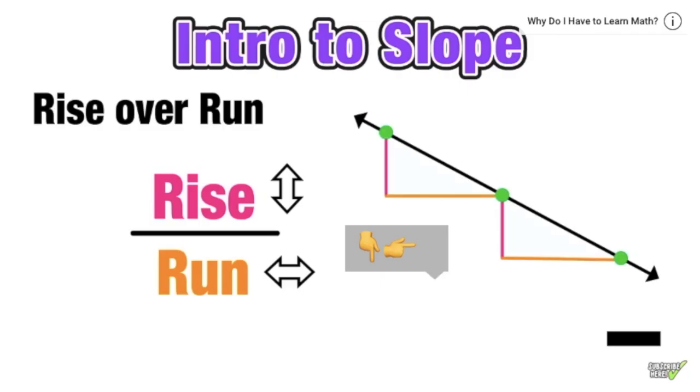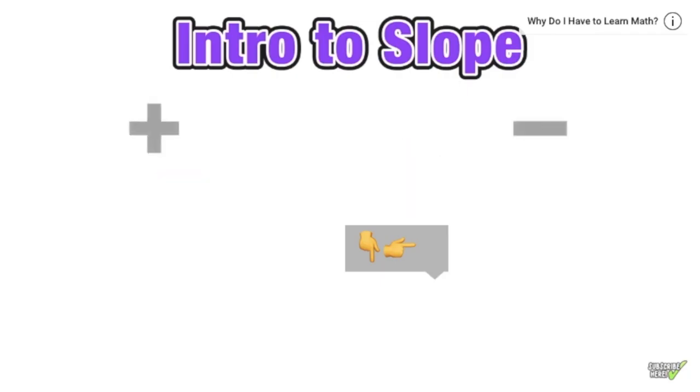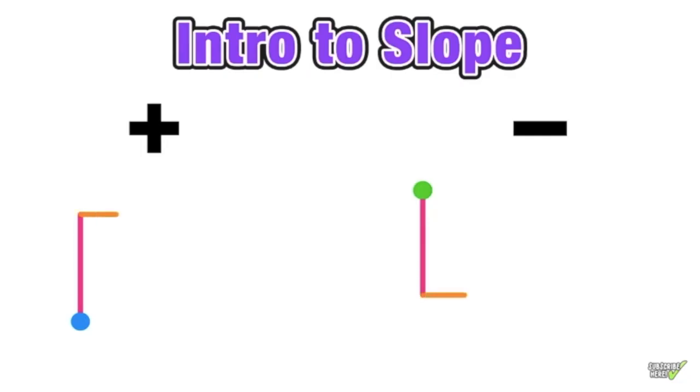Let's take a few moments to visualize the difference between applying rise over run to positive and negative slopes. Notice that the line with the positive slope is increasing from left to right and that the line with the negative slope is decreasing from left to right.